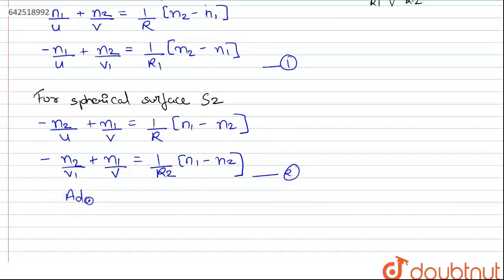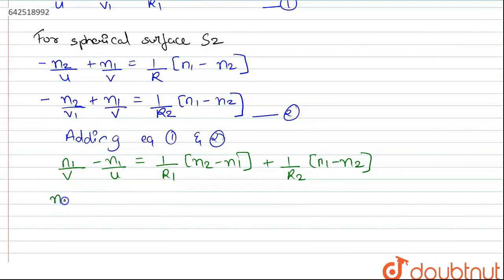Now adding both the equations, equation 1 and 2. So as we look at both the equations, minus N2 by V1 and plus N2 by V1 cancel. Thus we are left with N1 by V minus N1 by U equals 1 upon R1 into N2 minus N1 plus 1 upon R2 into N1 minus N2. Now taking N1 common from here and N2 minus N1 common from here, it will change the sign of R2. We get N1 into 1 upon V minus 1 upon U equals N2 minus N1 into 1 upon R1 minus 1 upon R2.